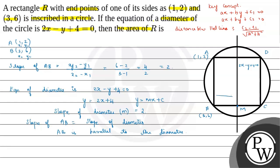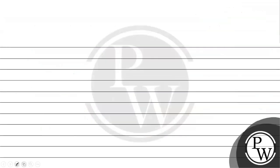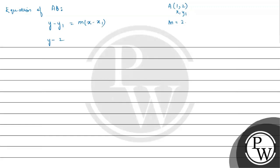Now let us find the equation of AB using the point-slope formula. We have coordinate of A as (1,2), taking this as x1, y1, and slope m equals 2. Equation of AB is y minus y1 equals m into x minus x1, giving y minus 2 equals 2 into x minus 1. Simplifying: y minus 2 equals 2x minus 2, so y equals 2x, which we write as 2x minus y plus 0 equals 0. This is the equation of AB.